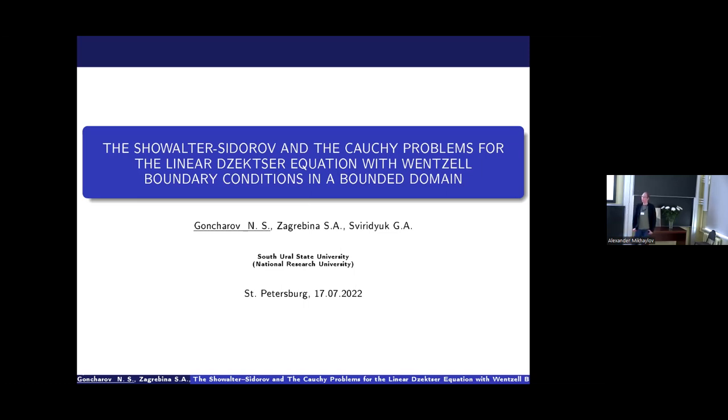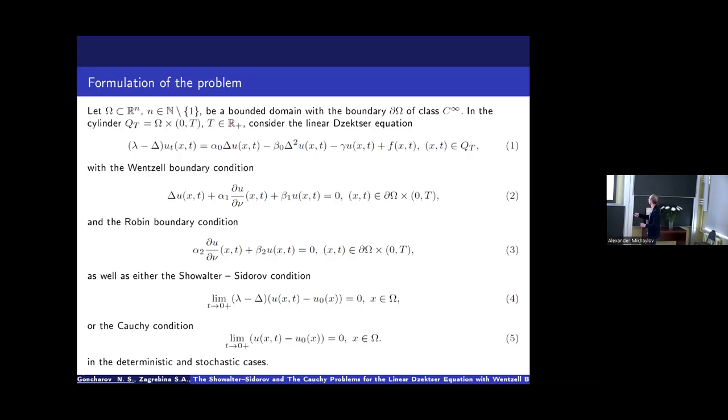Today I'm going to tell you about the Showalter-Sidorov and the Cauchy problem for the linear Dzekzer equation with Wenzel boundary conditions in a bounded domain. Next slide, please. Let's move to the setting of the problem. Let Ω be a bounded domain with a smooth boundary. In the cylinder, let us consider the linear Dzekzer equation, which describes the flow of free surfaces of a filtered fluid with Wenzel boundary condition and the Robin boundary condition, as well as the Showalter-Sidorov condition or the Cauchy condition in the deterministic and stochastic cases.